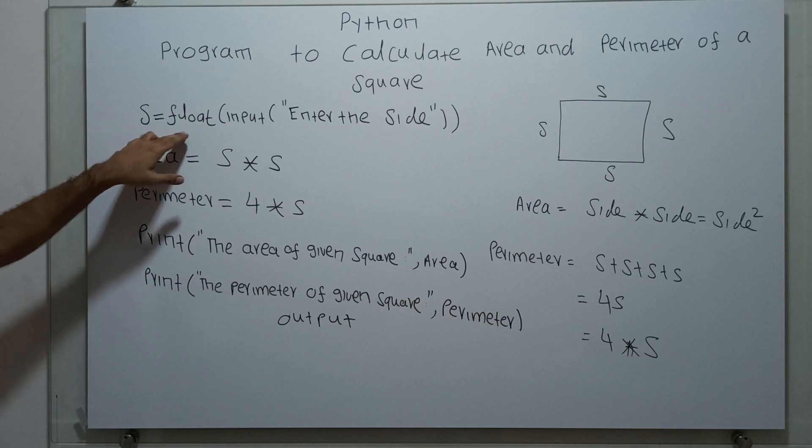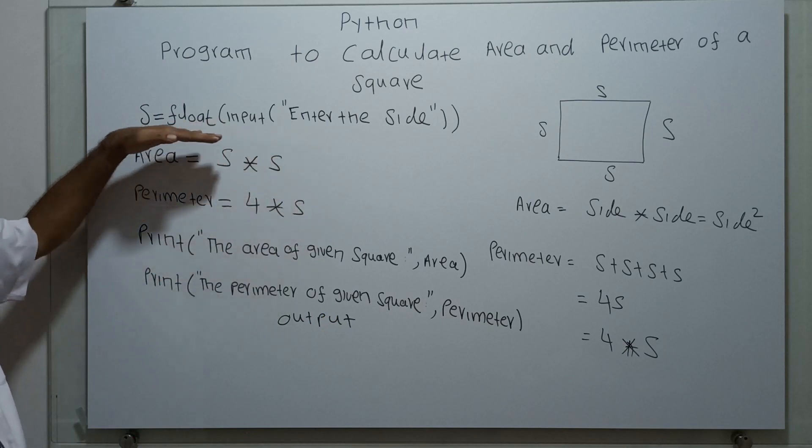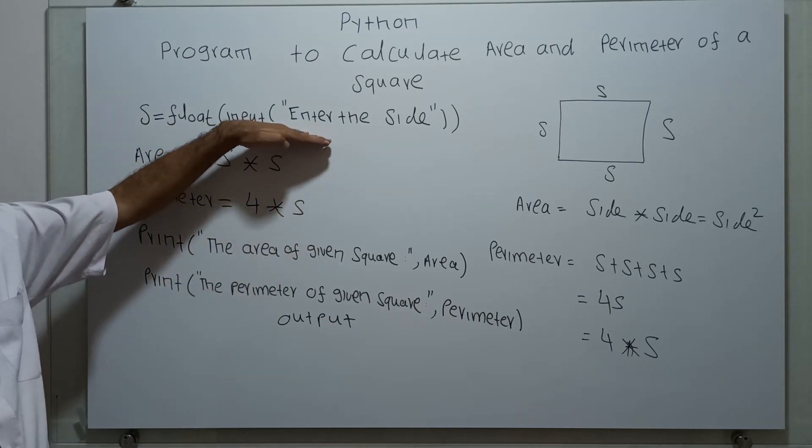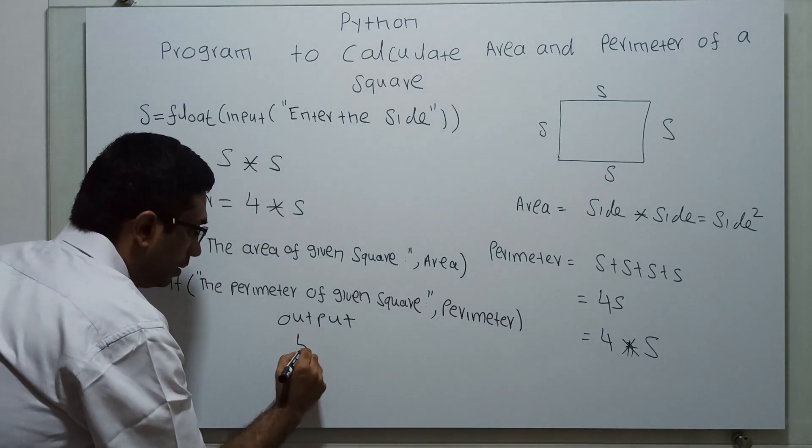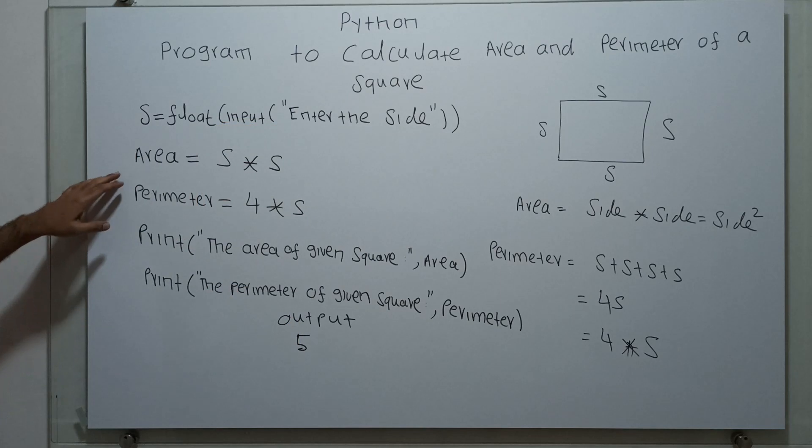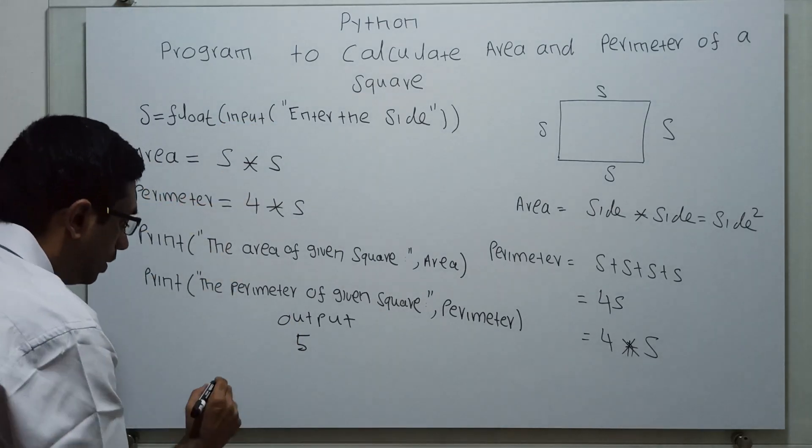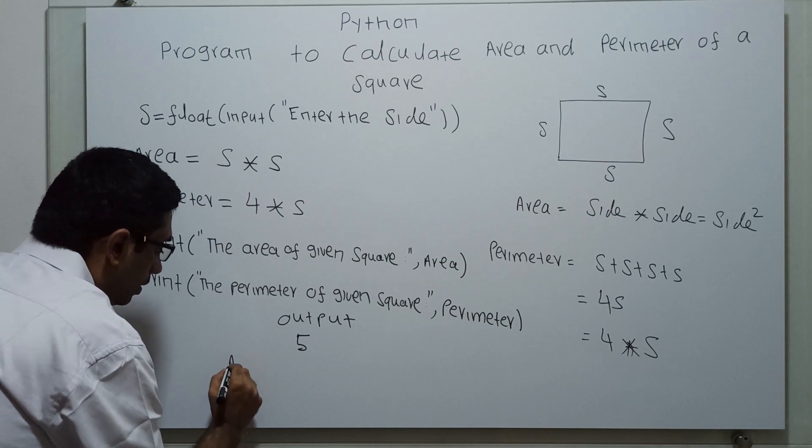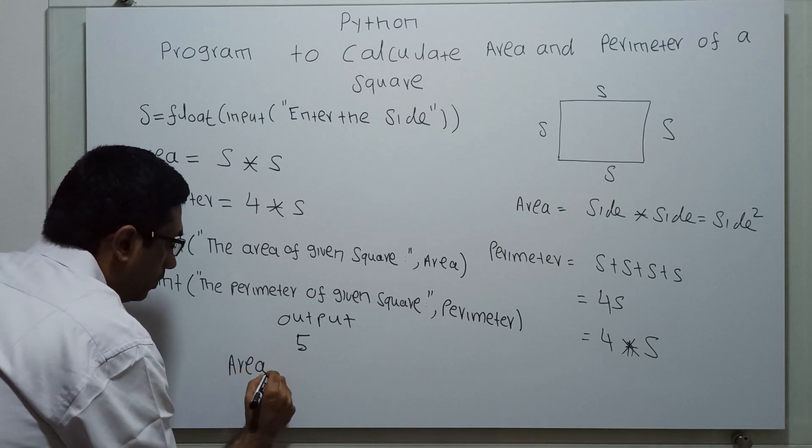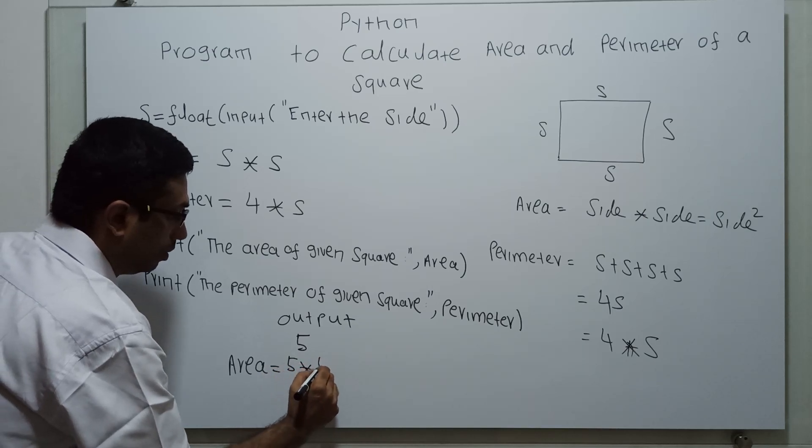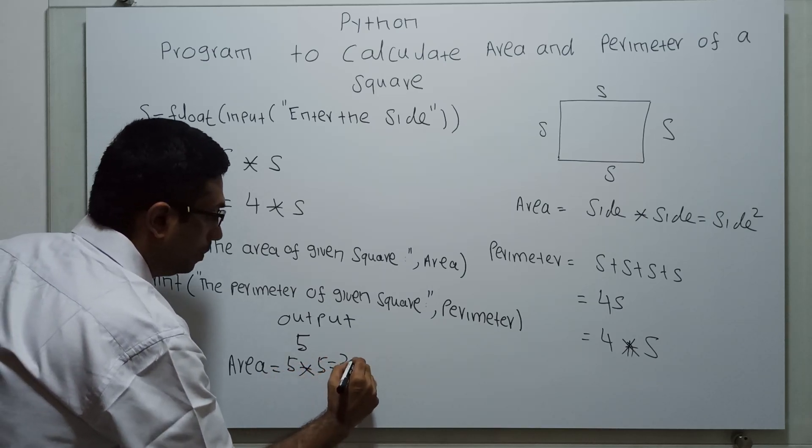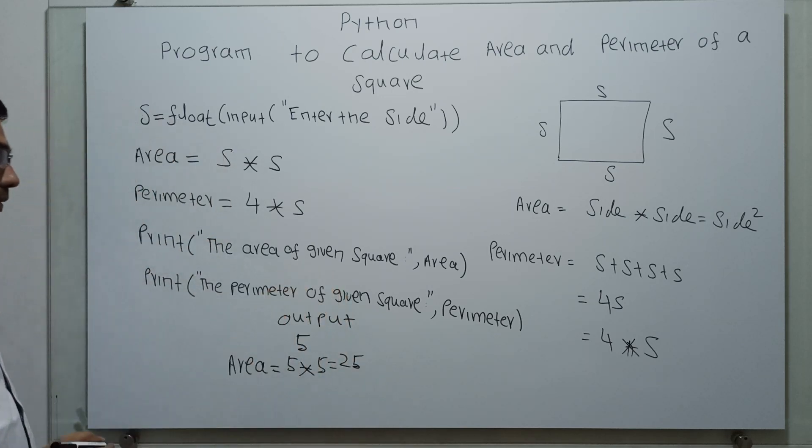S equals float of input of enter the side. Enter the side is a message. When I enter 5, my input is 5. Then area equals S into S, so area equals 5 into 5, which is equal to 25.